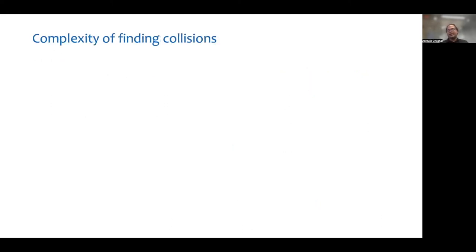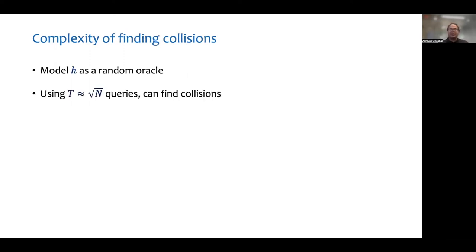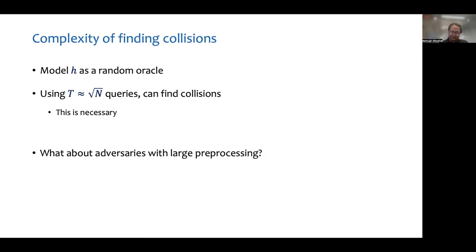We are interested in quantifying the collision resistance of the Merkle-Damgård construction. The most common approach is to model the compression function H as a random oracle. When doing so, one can find collisions using roughly square root n queries to the random oracle. This is essentially the birthday attack, and this attack is optimal. But typically H is a public function, and the adversary might be able to do a lot of preprocessing on it.